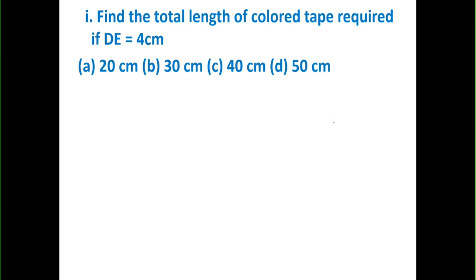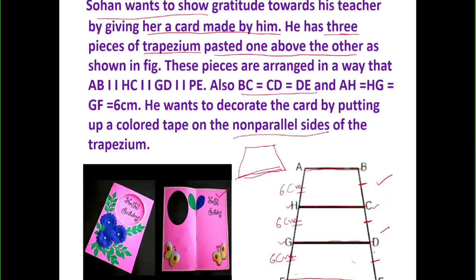In this first question, we have been given that DE equals 4 cm. Since BC equals CD equals DE, all three are 4 cm. To find how much colored tape is needed along the non-parallel sides, we need to add all the non-parallel side values. On one side, AF equals 6 plus 6 plus 6, and on the other side, the three segments are 4 plus 4 plus 4. Therefore the total length of the tape is 30 cm. The final answer is option D: 30 cm.